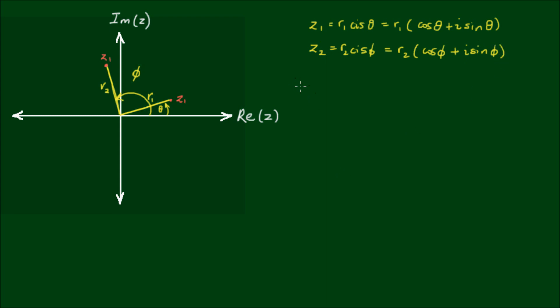So now to find the product of z1 by z2, it is simply a matter of multiplying these two entities together. So z1 times z2 is equal to r1 cos θ plus i sin θ times r2 cos φ plus i sin φ, and now I can do the tedious step of expanding this out and simplifying.